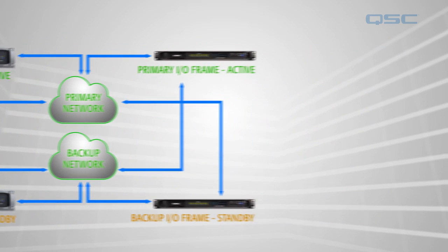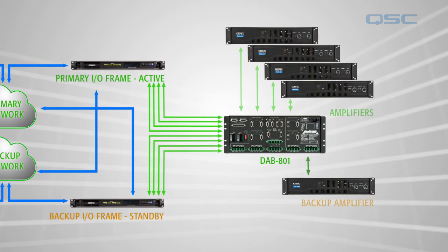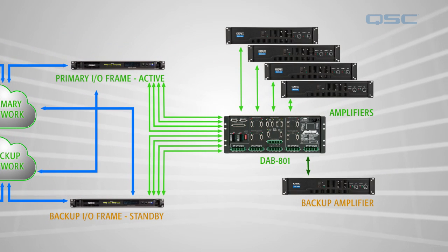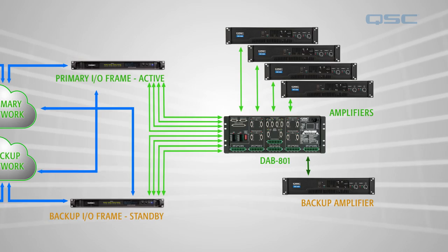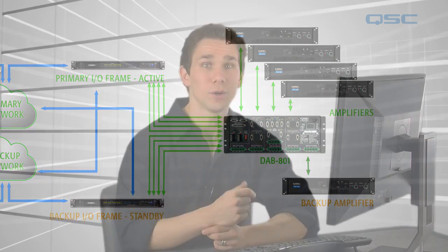In addition, you can have amplifier redundancy with the help of QSC's DAB801, which is the data port amplifier backup panel. Now we're going to simulate a possible failure for each of these elements so you can see for yourself how the system reacts.